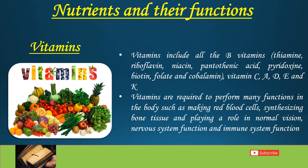Vitamins: Vitamins include all the B vitamins — that is thiamine, riboflavin, niacin, pantothenic acid, pyridoxin, biotin, folate, and cobalamin — and vitamins C, A, D, E, and K. Vitamins are required to perform many functions in the body such as making red blood cells, synthesizing bone tissue, and playing a role in normal vision, nervous system function, and immune system function.